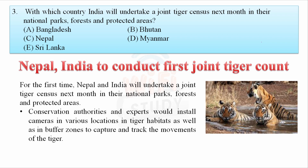With which country will India undertake a joint tiger census in their national parks, forests, and protected areas? The answer is Nepal — India and Nepal will conduct the first joint tiger count. In India there are nearly 50 tiger reserves, all governed by Project Tiger, administered by the National Tiger Conservation Authority. India is home to 70% of the world's tigers; in 2016 there were nearly 1,400 tigers.